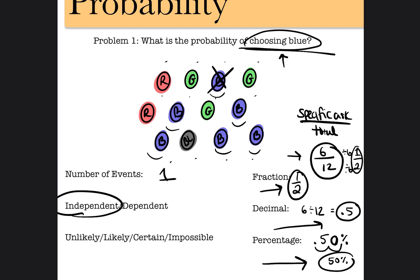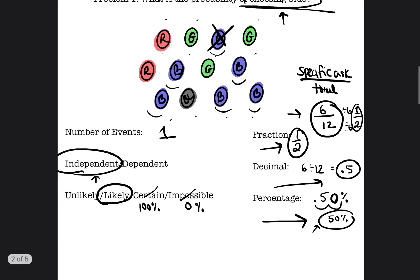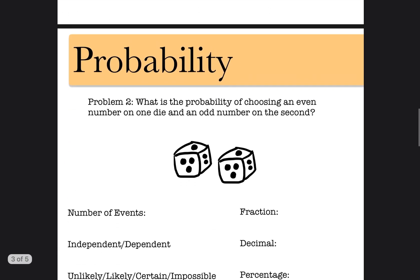It's only one event because it's one action — choosing blue — and it's an independent event because it's not affected by any other event. Is it unlikely, likely, certain, or impossible? Certain means 100% chance; impossible means 0%. It's only 50%, so it's not certain and not impossible. If there's a 50% chance of rain tomorrow, you would bring an umbrella because it's likely that event would take place. So we circle likely. We have three more problems to go over the difference between independent and dependent events.